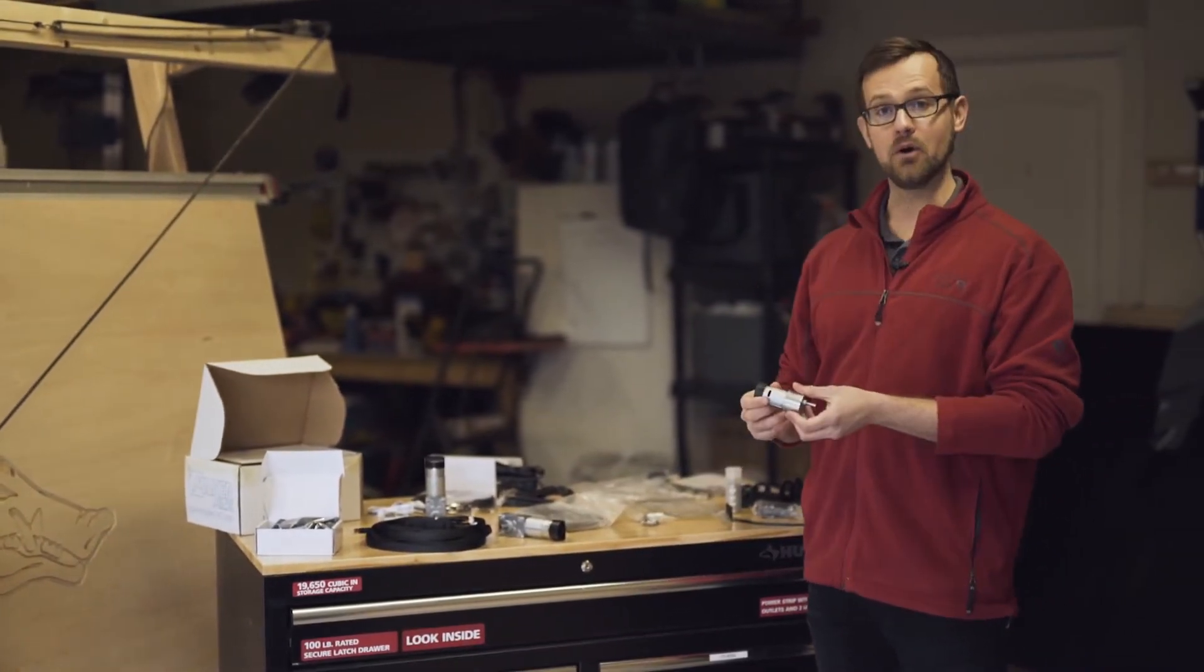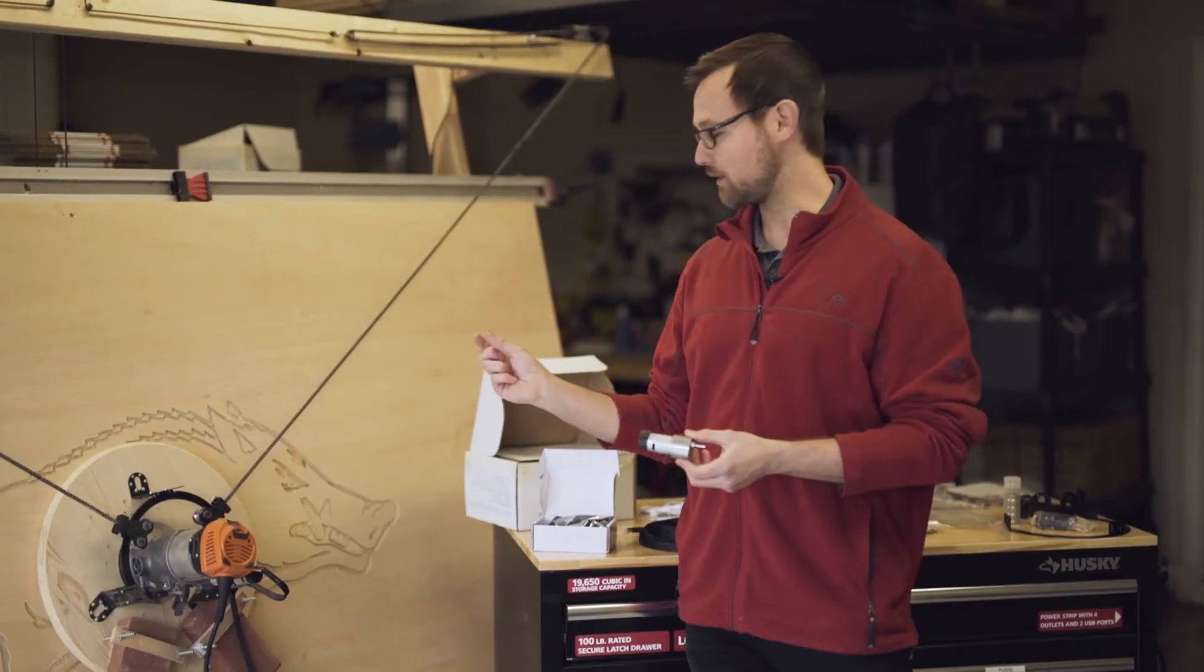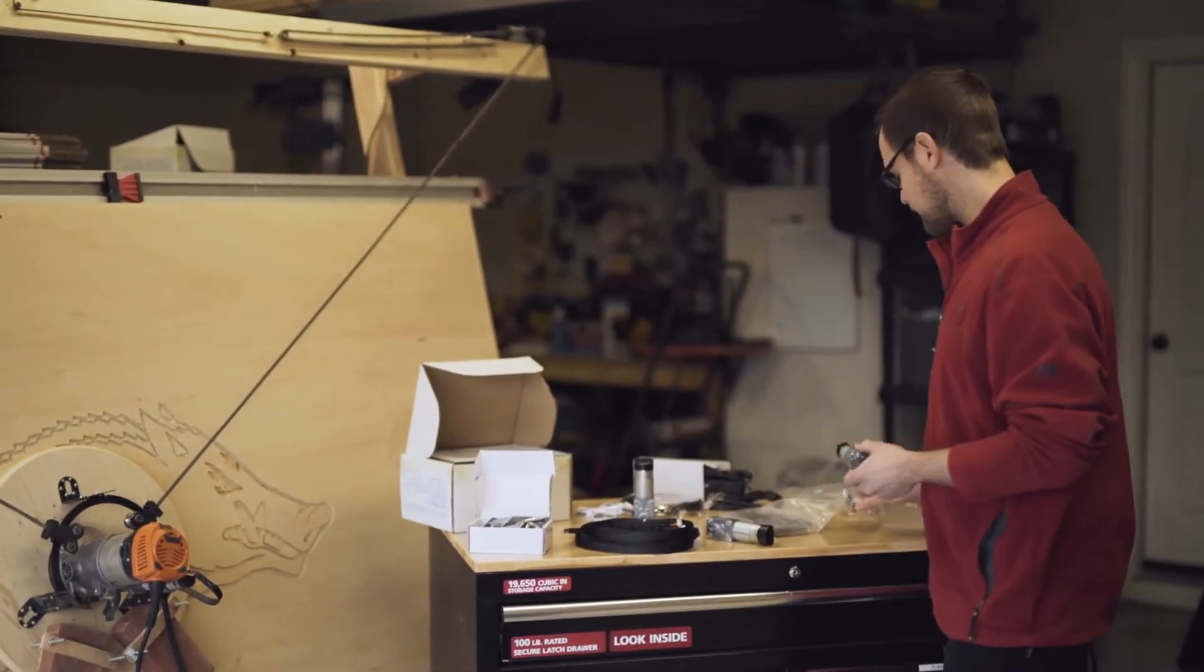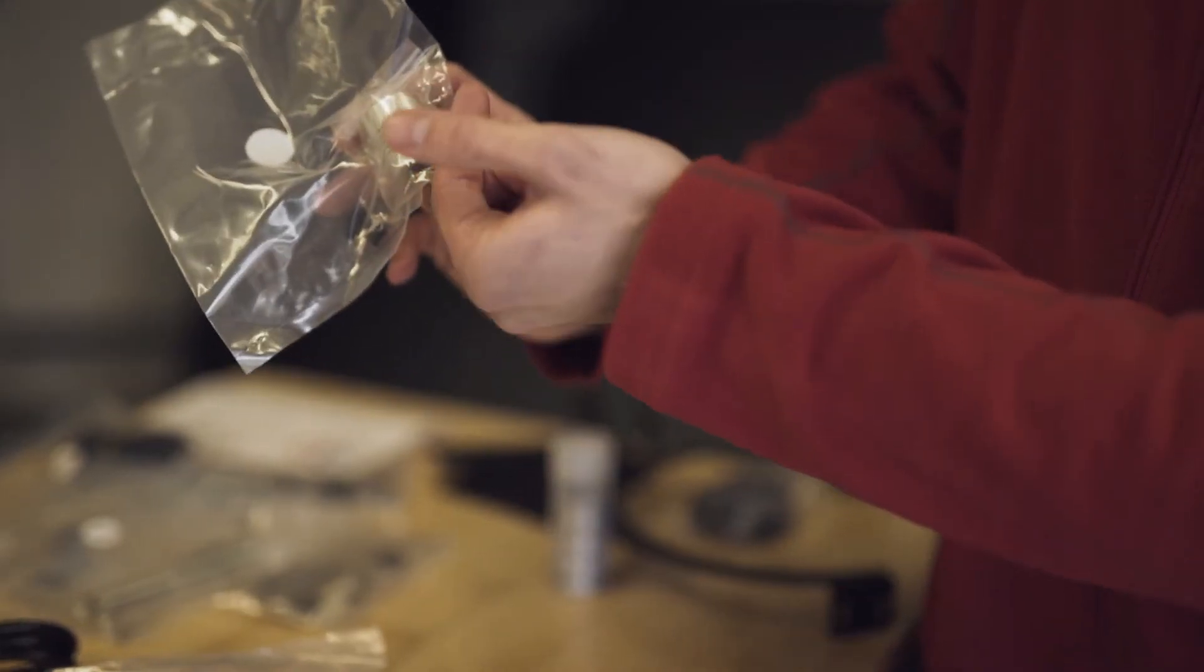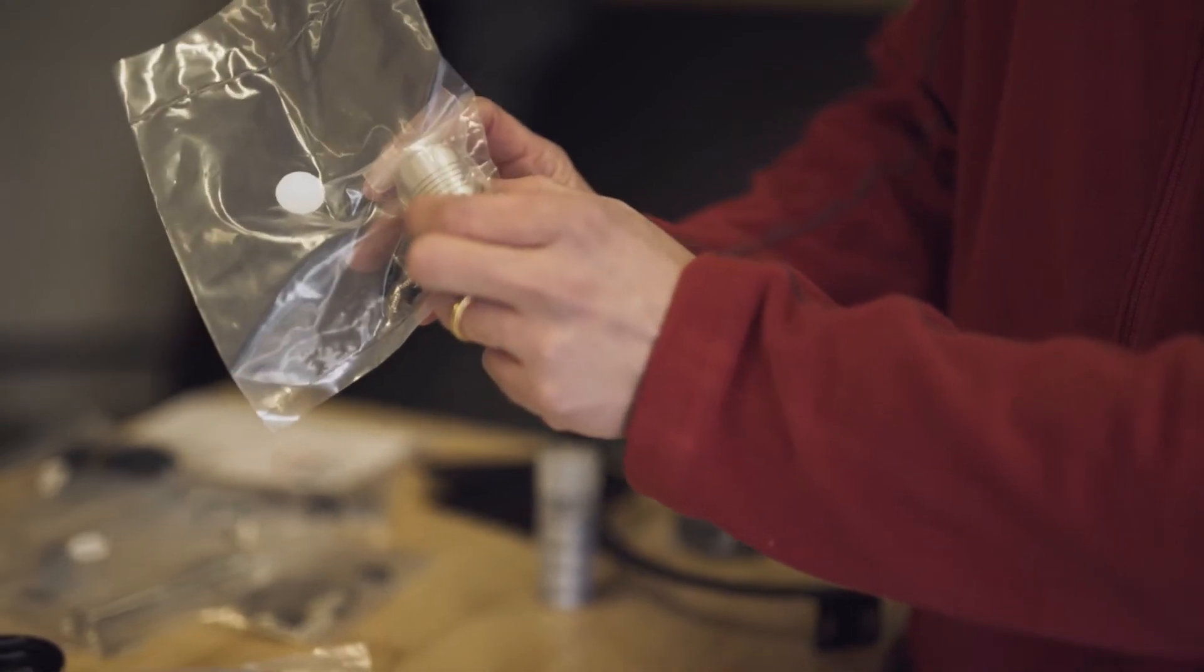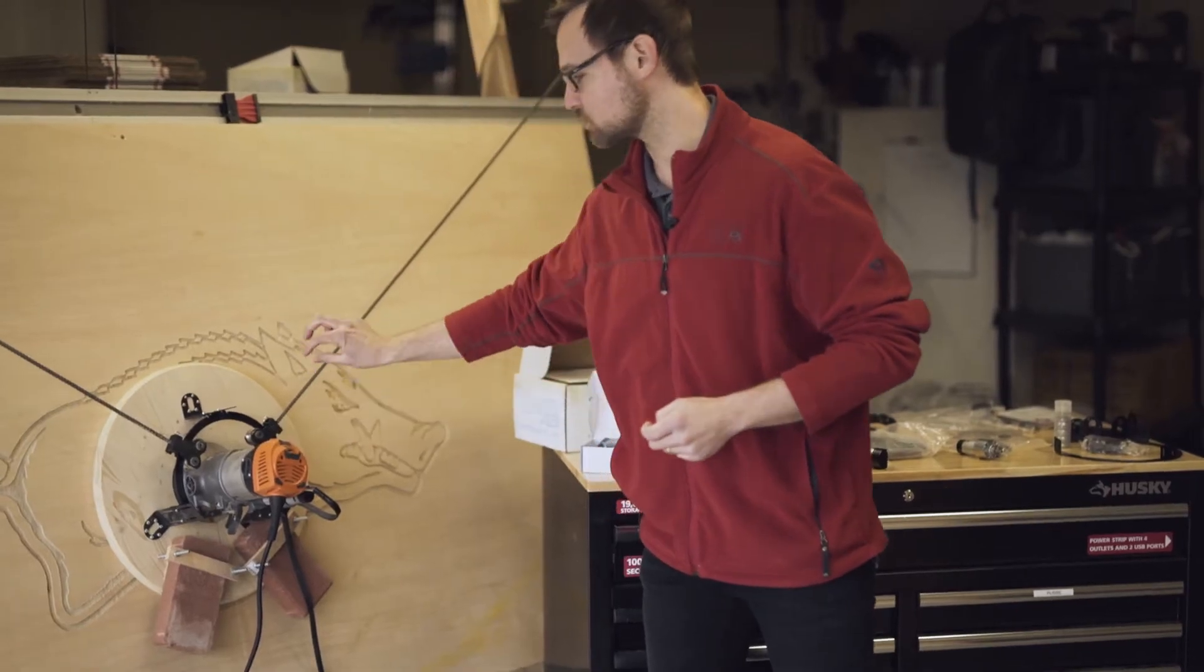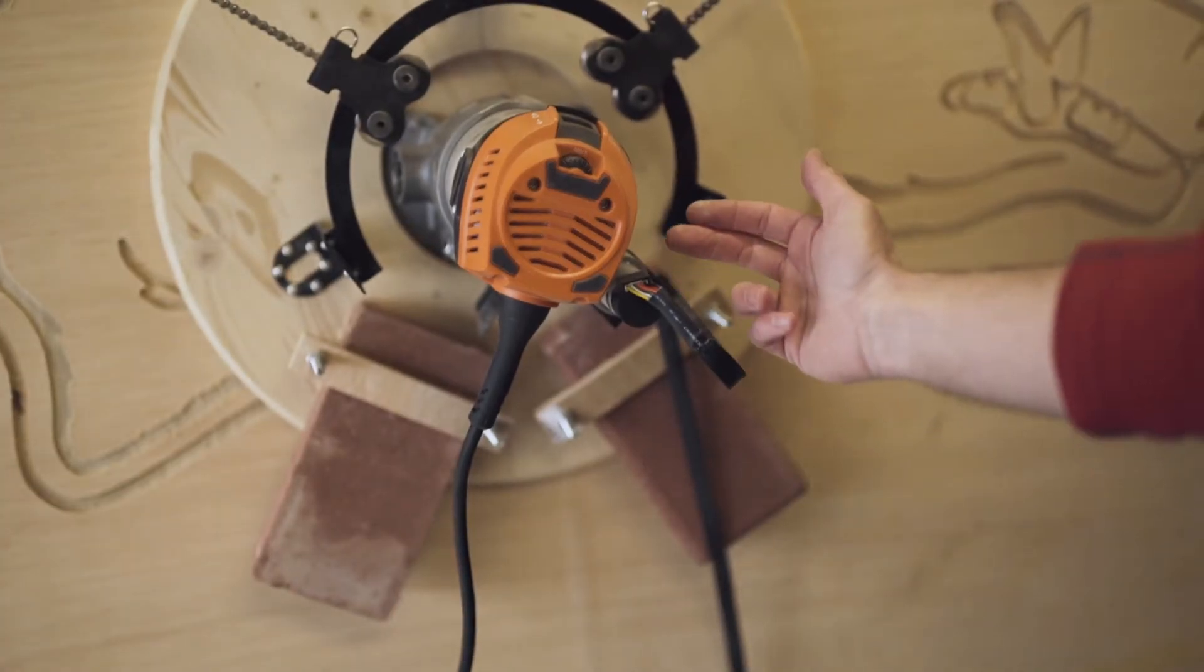Next we have the z-axis motor. So the z-axis motor is what drives that router bit up and down. It connects to the z-axis coupler right here, and that coupler is what actually attaches to the router itself and drives that screw left and right, and that's what drives that router bit up and down.